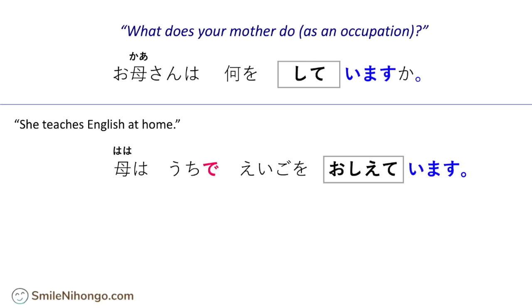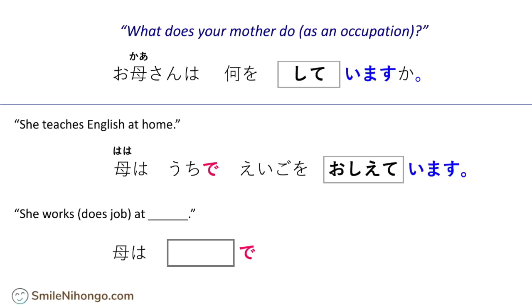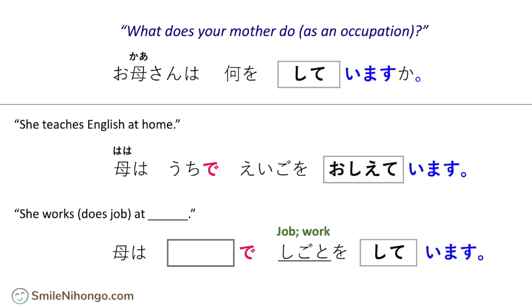Most of you can talk about your mother's occupation in this format: 'She works at...' and put a company name or place name there. For instance, if you want to say she works at a restaurant: 母は、レストランで、仕事をしています。 To say 'she works,' you say 'she does a job' in Japanese. If she works at a post office: 母は、郵便局で、仕事をしています。 You can put any place name or company name there.